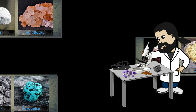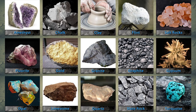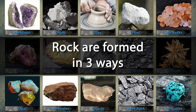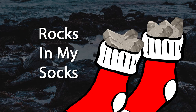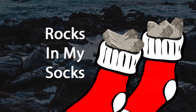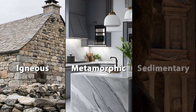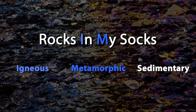Scientists often classify rocks according to how they are formed. There are many kinds of rocks, but they are all formed in only one of three ways. I like to use the term 'rocks in my socks' to remember the three ways: igneous, metamorphic, and sedimentary.